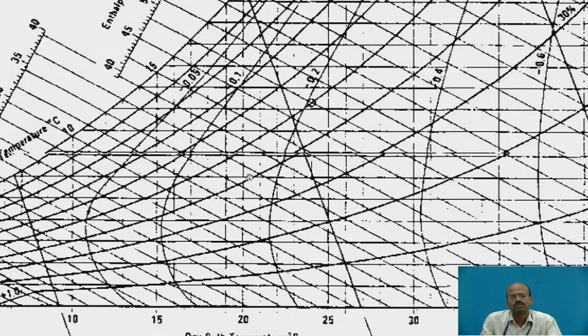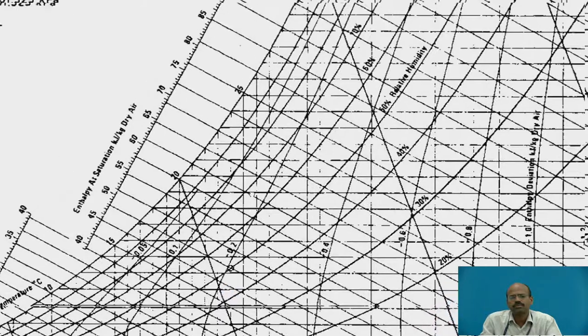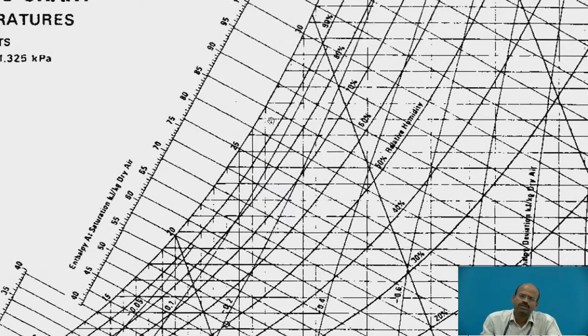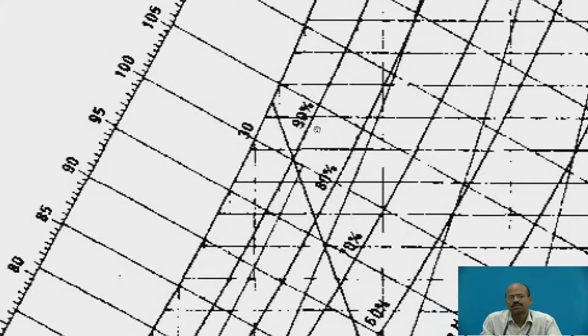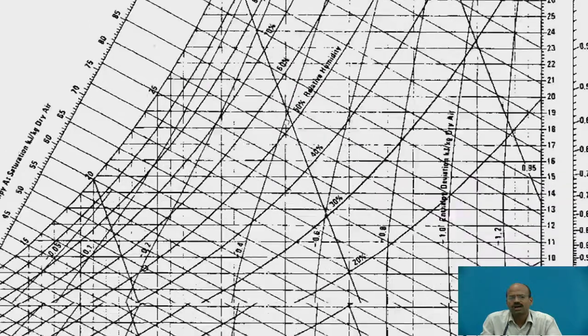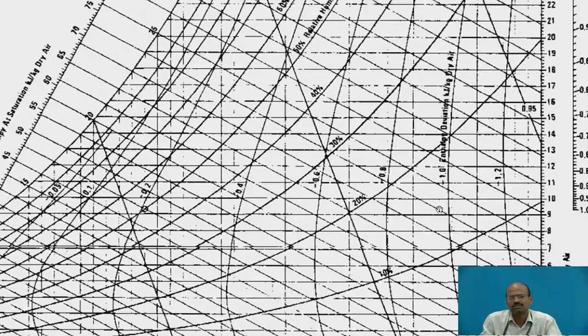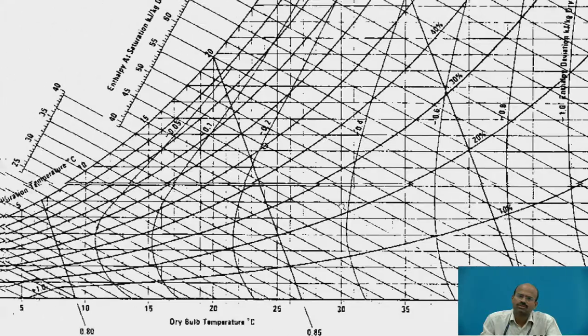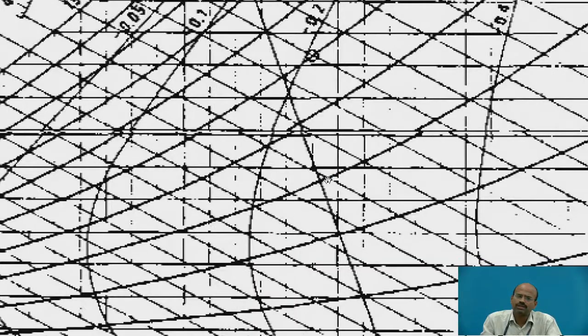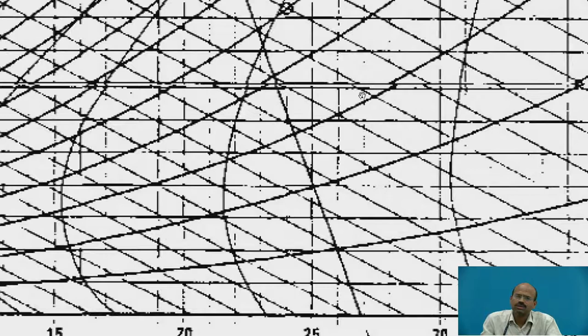Third property is relative humidity. This saturation curve has 100 percent RH, then other RH lines such as 90 percent, 80 percent, 70 percent. All these RH lines are these curves, along these curves the RH remains constant. That previous point was somewhere here, so we can obtain easily the RH relative humidity of that moist air.